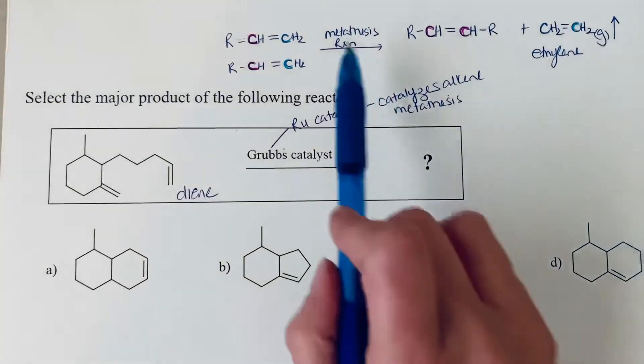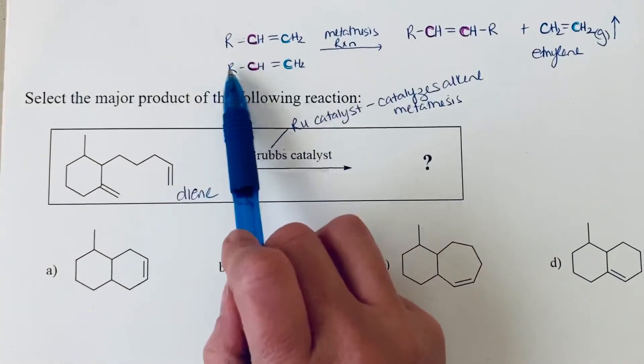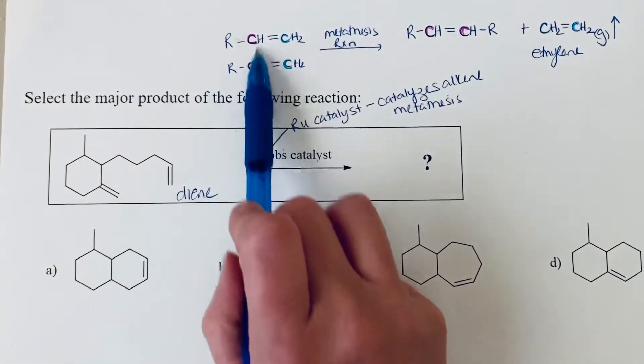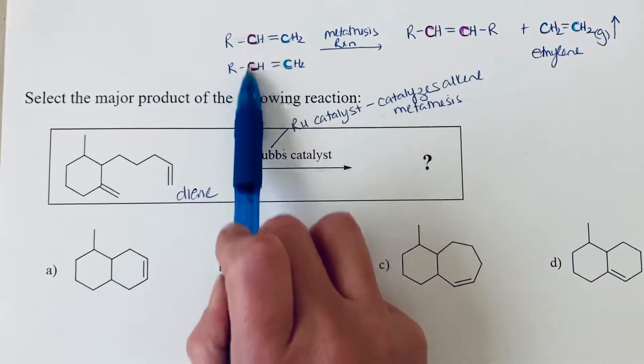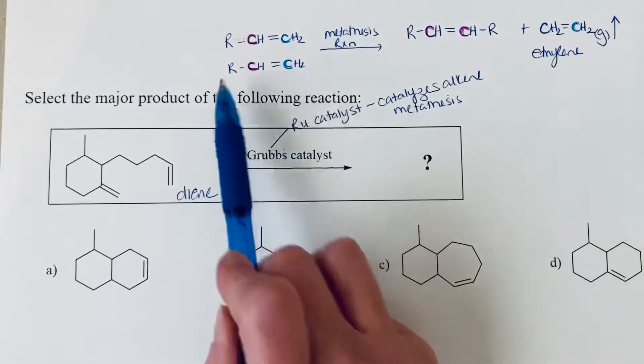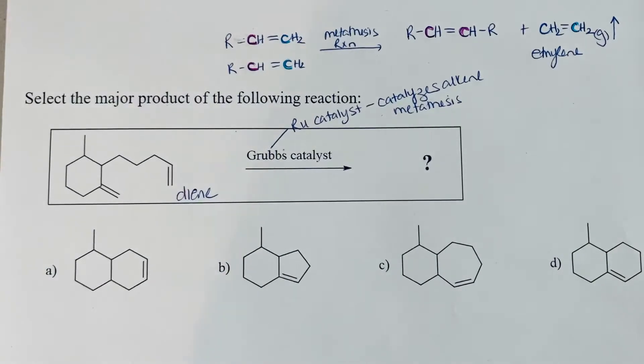And so when we have a metathesis reaction like this, if I drew this as acyclic, you could either line these two alkenes up the way that I've drawn it or you can flip one over and line it up the other way. So you have a little bit less control. Now you can still do those reactions,